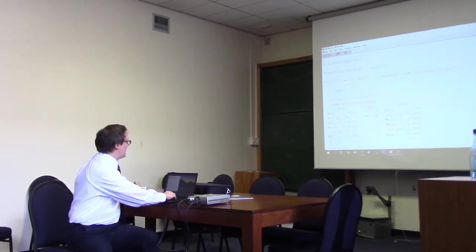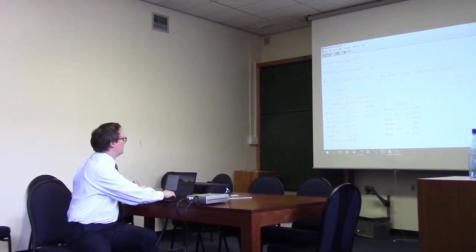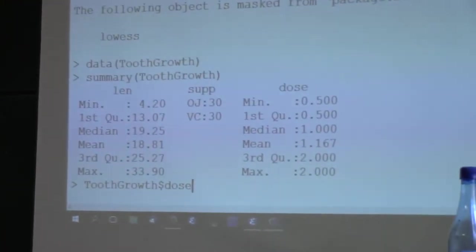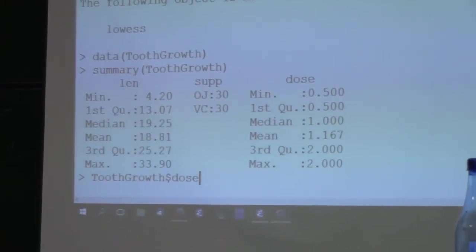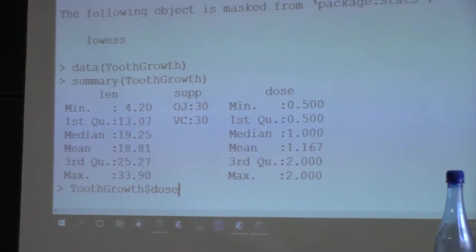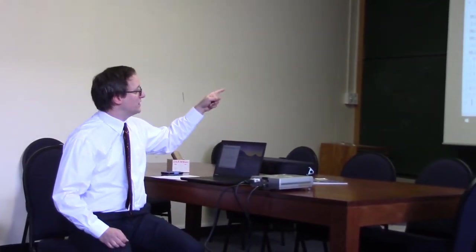So, if I examine that particular field, I can call out that particular sub-field of the data frame by just using dollar sign dose. So, I just want to report all of the values in this vector, tooth growth dose. Okay. And I see that there are 0.5s and there are 1s and there are 2s. Does anyone see any other value there? Are there any not applicables or missing values? No. So, we just have those three values.